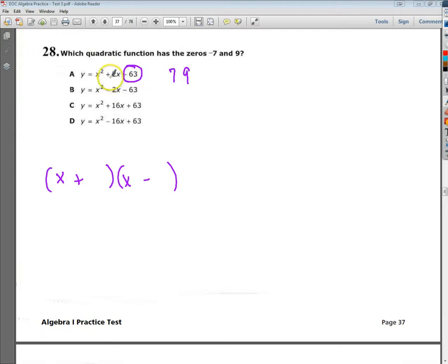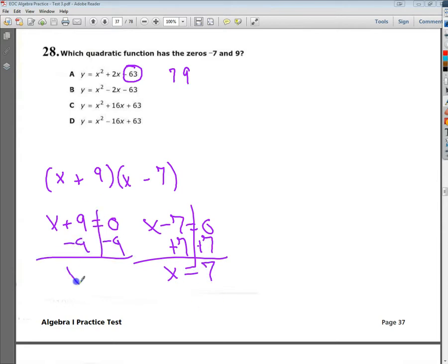And since the 2 is positive, I need to put the 9 after the plus. So that's that one factored. To find my zeros, I just set each of these equal to 0. So add 7 to both sides, x is equal to 7, and subtract 9 on this one, x is equal to negative 9. So negative 9 and 7, that's not what I'm looking for.